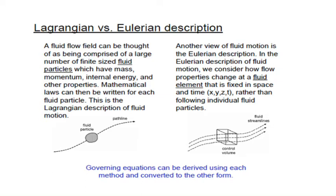In the Eulerian description of fluid motion, we consider how flow properties change at a fluid element which is fixed in space and time. In other words, it is a function of space and time — that is x, y, z, t — rather than following individual fluid particles.